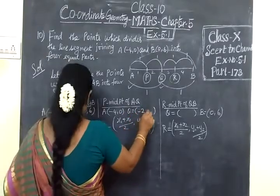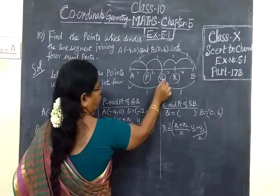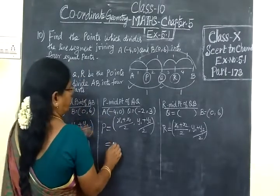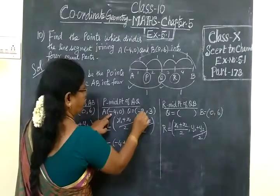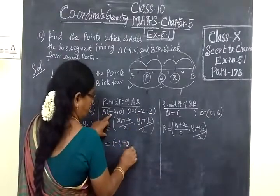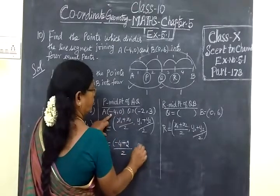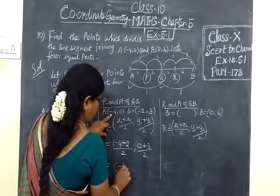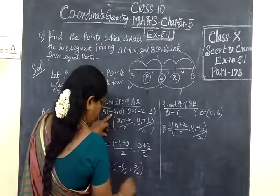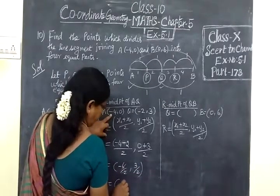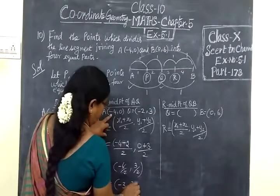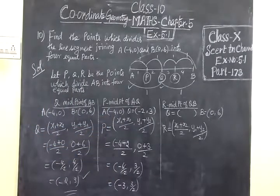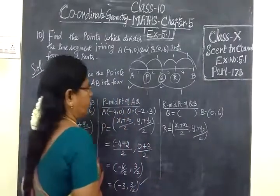So P is the midpoint of A and Q. P equals X1 plus X2, here you can write minus 2, Y2 by 2. Y1 is 0, Y2 is 3 by 2, equals minus 6 by 2, 3 by 2. So the answer is, if you cancel, minus 3, 3 by 2. So P is minus 3, 3 by 2.